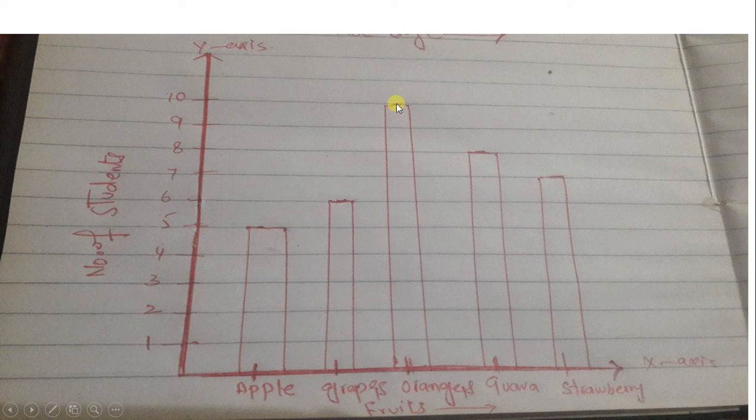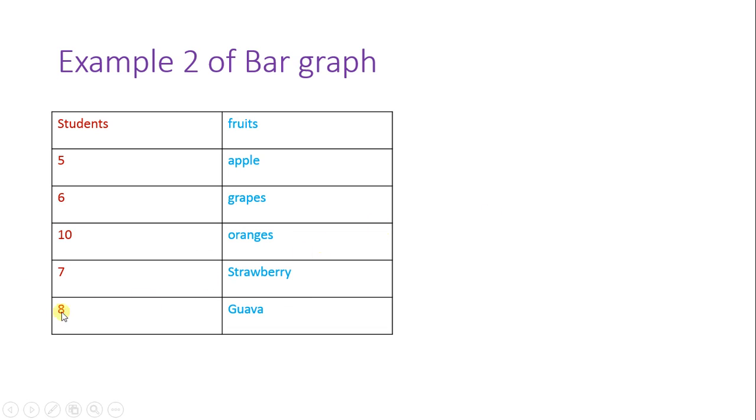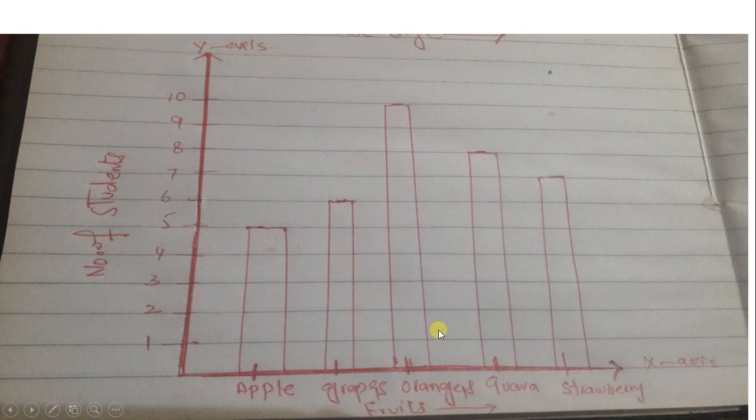Similarly, I draw a bar on oranges till 10 because 10 students like oranges. I have to see how many students like Guava, and 8 students like Guava, and similarly for strawberries. When the data is given to you, you have to show the data through line graph or bar graph. I hope you guys can do it.